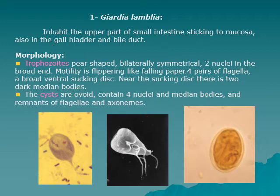Giardia lamblia sticks to the mucosa and is also found in the gallbladder and bile duct. Regarding morphology, the trophozoites are tear-shaped, bilaterally symmetrical, with two nuclei at the broad end. Motility is a flipping movement like falling paper. There are four pairs of flagella.